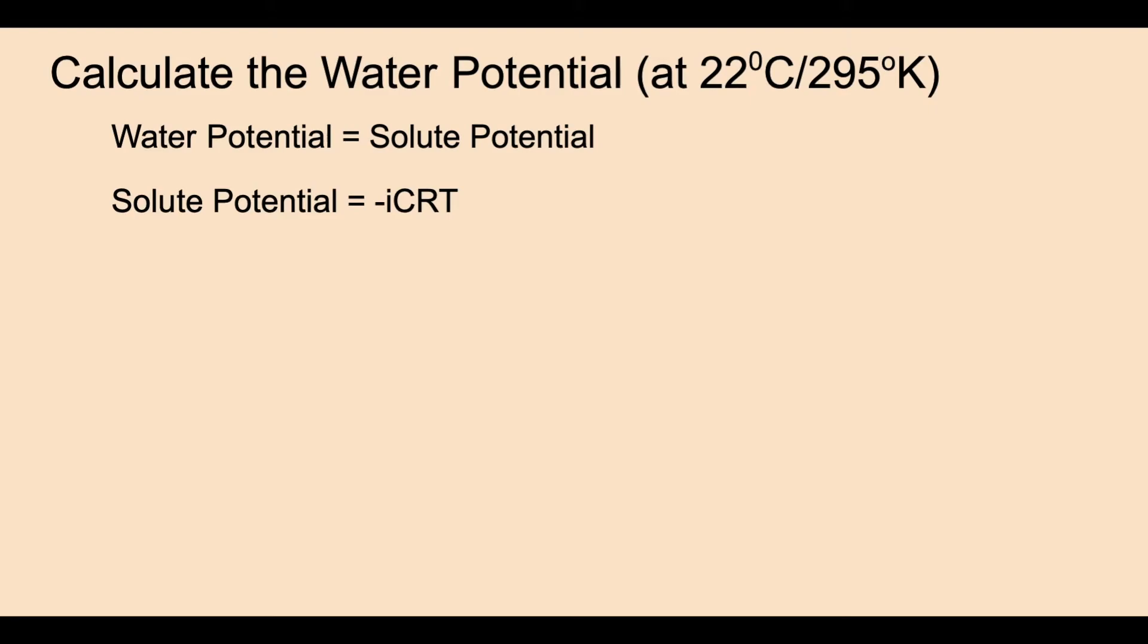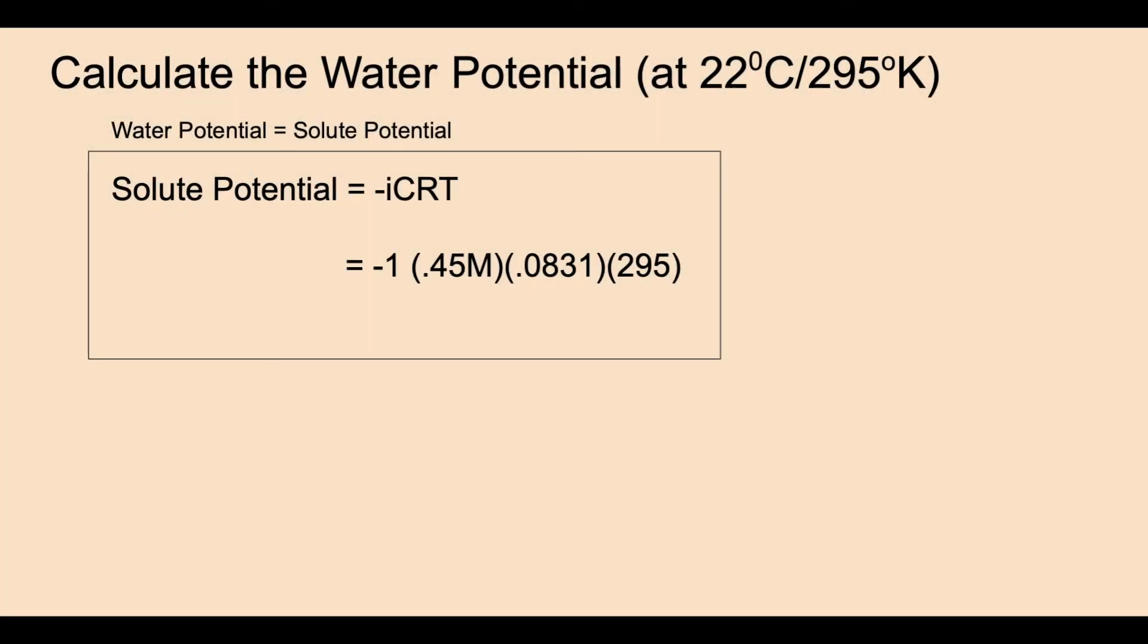The C is the concentration of sucrose, which we determined to be 0.45 molar. R is a gas constant. This is going to be the same for all of our equations, 0.0831. And our degrees Kelvin is 295. And what value do we get? We get minus 11 bars of pressure.